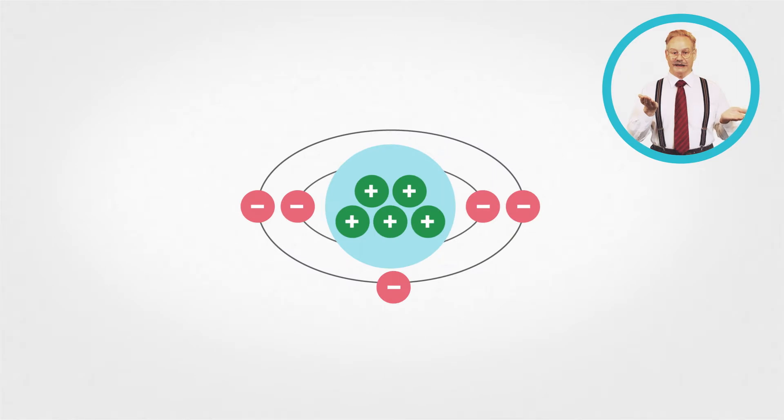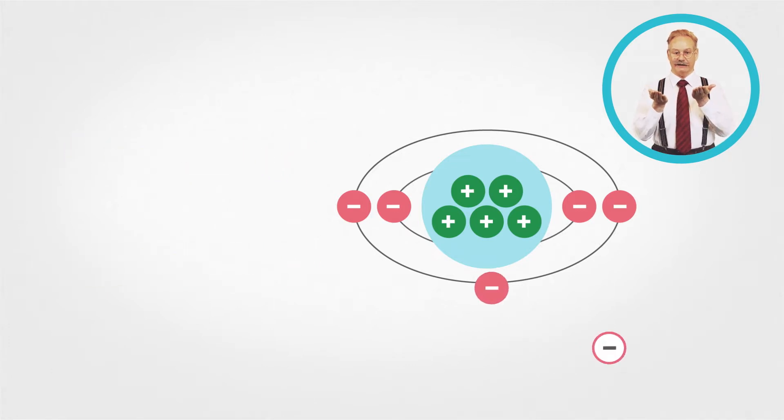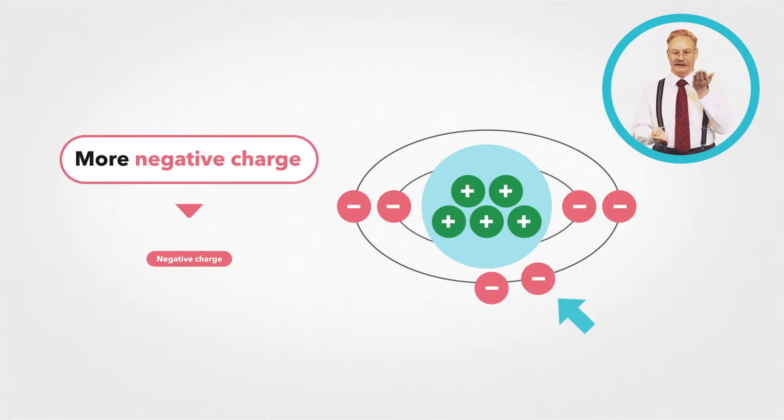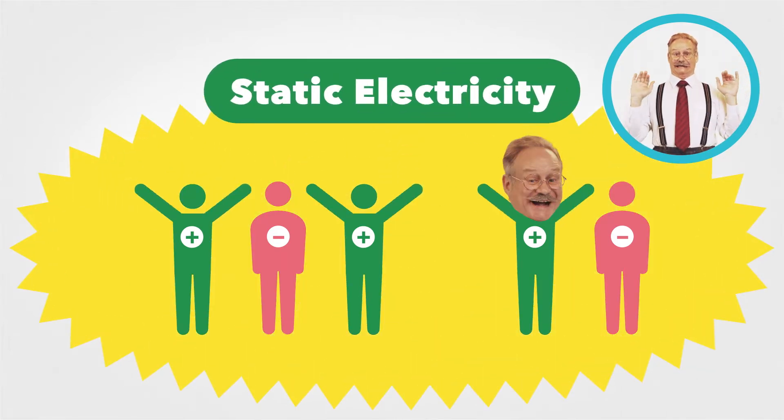When negative charges are lost, you have greater positive charge. When negative charges are gained, you have greater negative charge. When the number of negative and positive charges is unbalanced, you get static electricity.